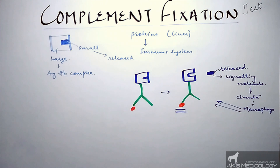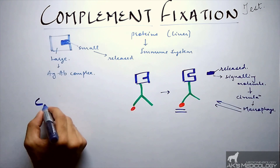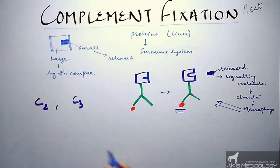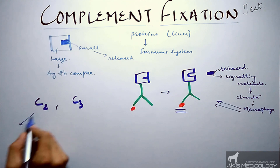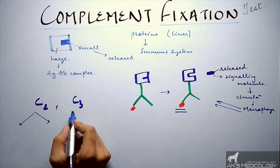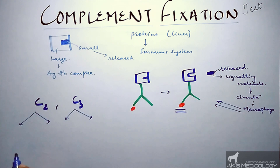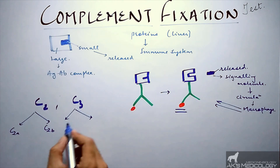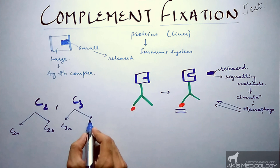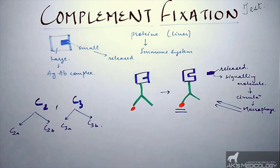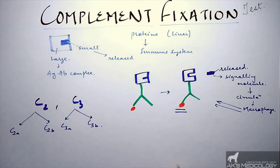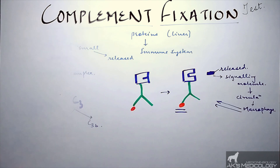There are various complement proteins, such as C2, C3, etc. Each has two parts — for example, C2a and C2b, and similarly C3a and C3b. One part is the large active part, and the other is the signaling molecule that is released when the complement protein contacts the antigen-antibody complex.